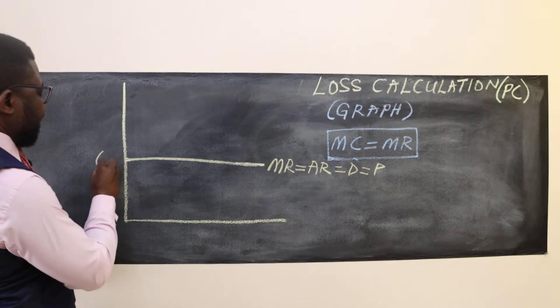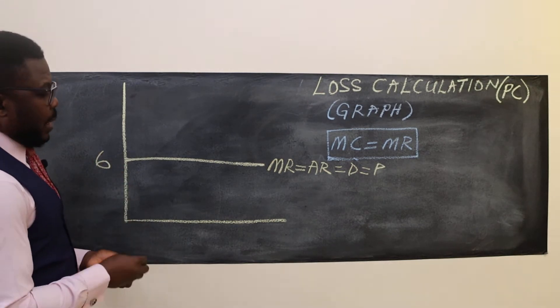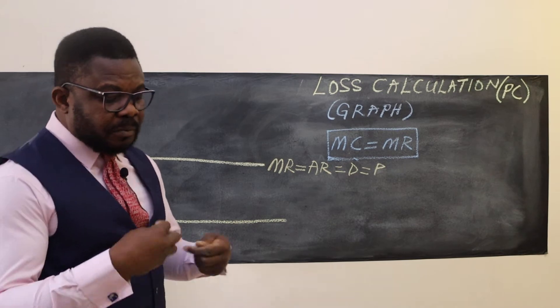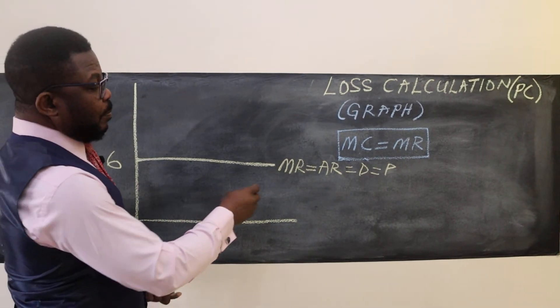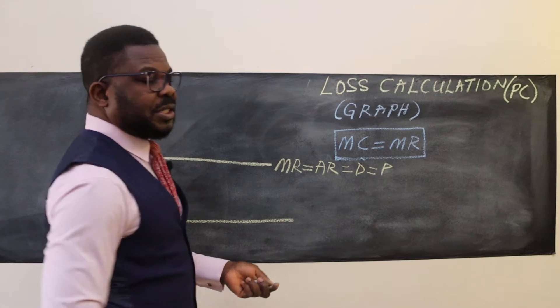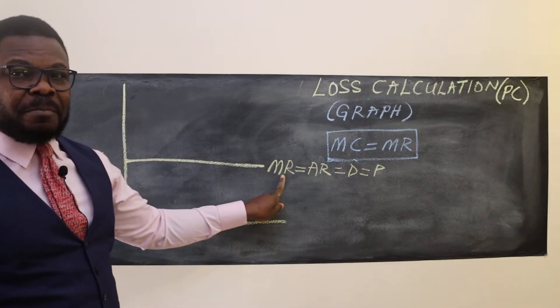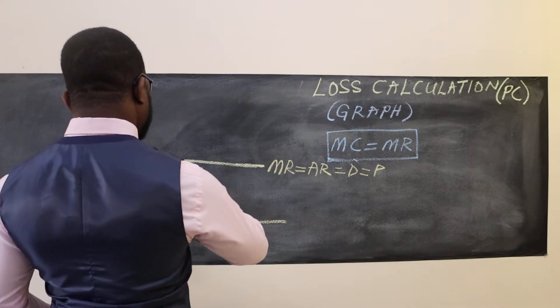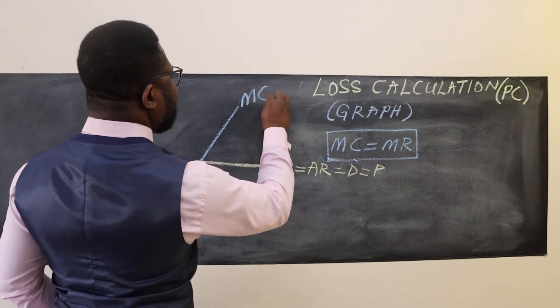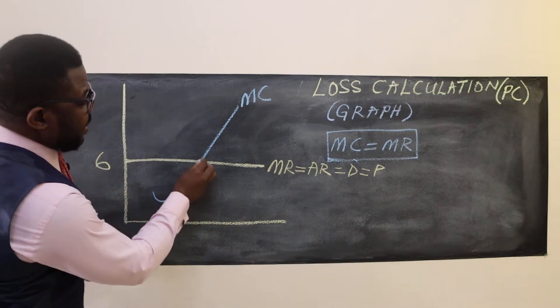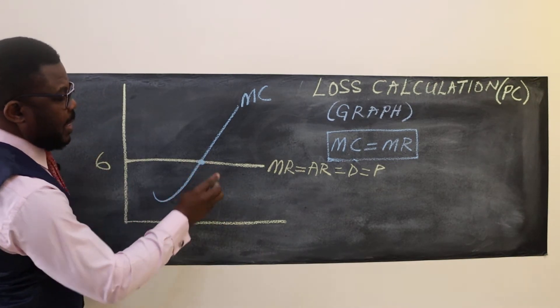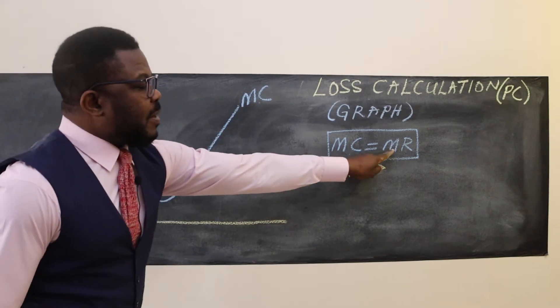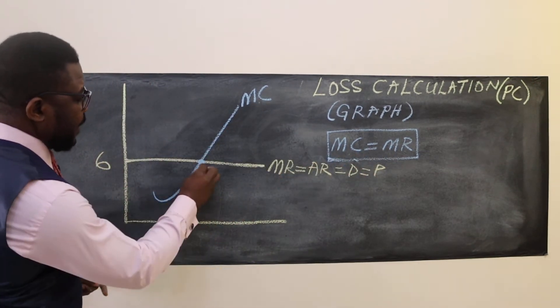We have the marginal revenue and we have to draw the marginal cost. MC equals MR happens here - this condition is fulfilled here. So let's say the quantity is ten.